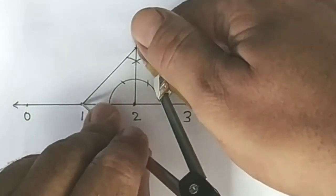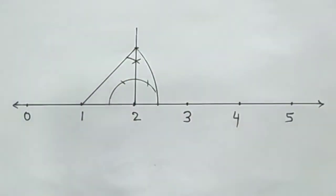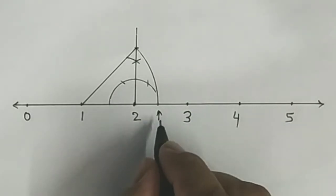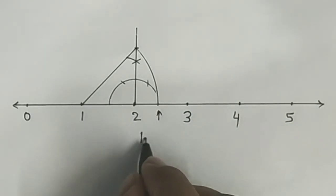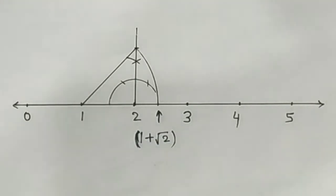And now we will draw the arc where the number line is cut. This point is 1 plus root 2. 1 plus root 2.